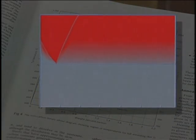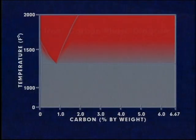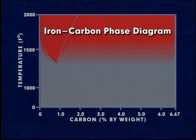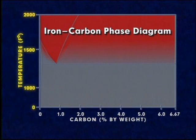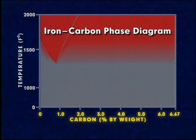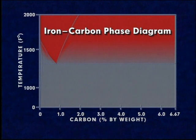This diagram is the iron-carbon phase diagram. Let's examine how temperature and carbon content combine to provide a variety of metallurgical structures.